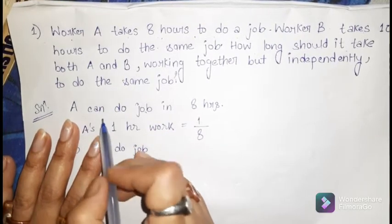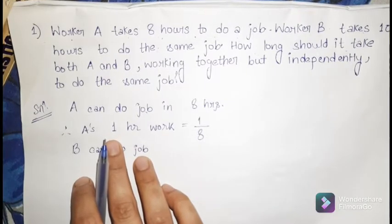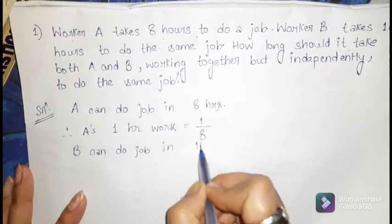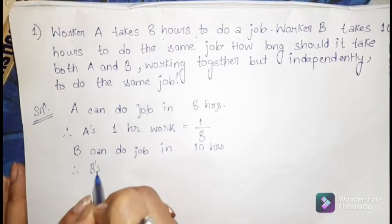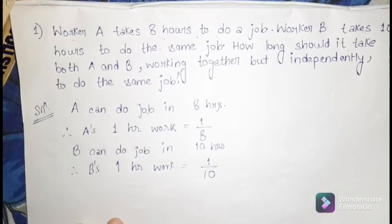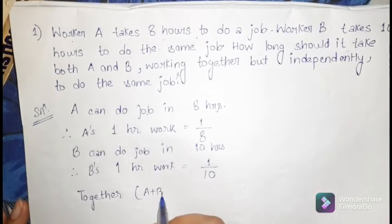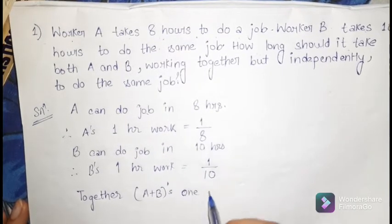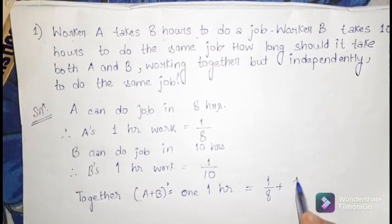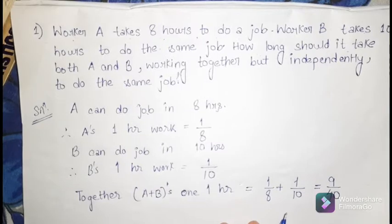A can do the job in 8 hours, so in one hour A does one-eighth part of that job. Similarly, B can do the job in 10 hours, so B's one hour work is one by 10. Together, A and B's one hour work is one-eighth plus one-tenth, which gives us nine by 40.